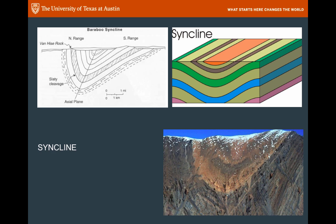We define two primary types of folds: one is called a syncline, the other is an anticline. Geologists very commonly remember which is which because syncline sort of sounds like sinking, and in a syncline the middle does, in fact, look like it has sunk. That's not where the word comes from, though — it comes from 'syn' meaning together and 'klein' meaning inclined or bent or tilted. So the limbs of the fold are tilted towards each other in a syncline; that's the origin of the word.